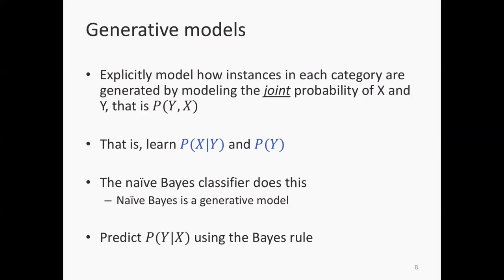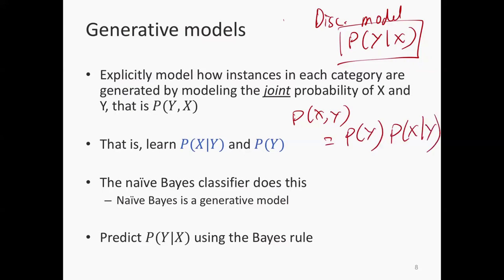Just to put this in contrast, a discriminative model models P(Y|X). This is the probability distribution that any discriminative model tries to characterize. But the generative model tries to characterize the joint distribution of X and Y. P(X,Y) is nothing but P(Y) times P(X|Y). Typically, generative models are set up that way.